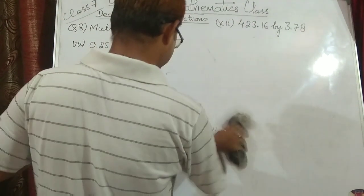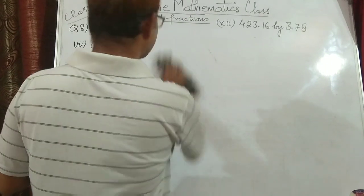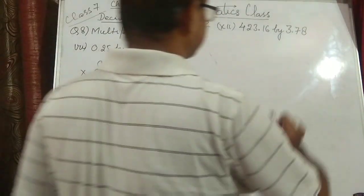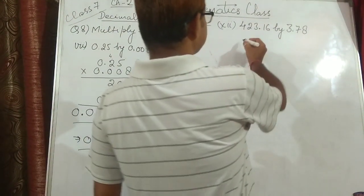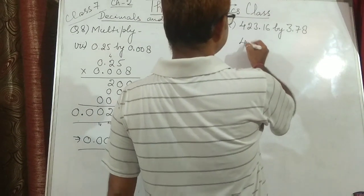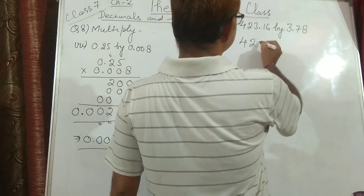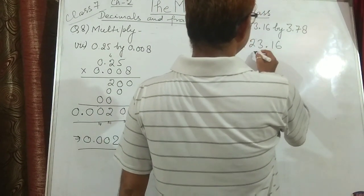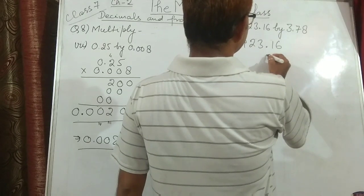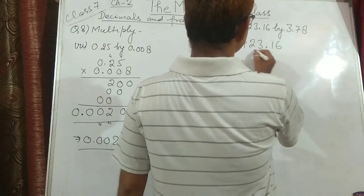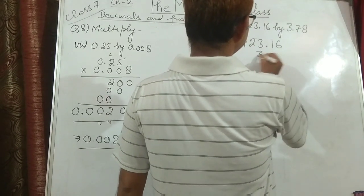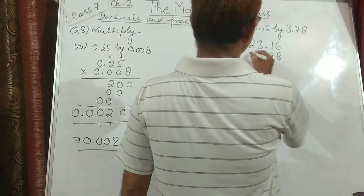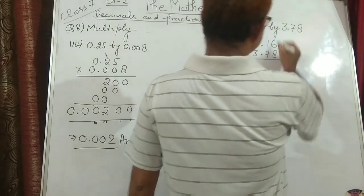Now let's move on to the next question, that is 423.16 into 3.78. First of all we multiply 423.16 by 3.78.